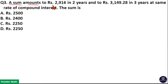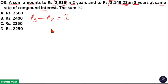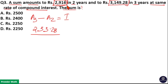A sum amounts to rupees 2916 in two years and rupees 3149.28 in three years at the same rate of compound interest. The amount received at the end of three years minus the amount received at the end of two years equals the interest received for the third year. Taking the difference: 3149.28 minus 2916 equals 233.28, which is the interest received.